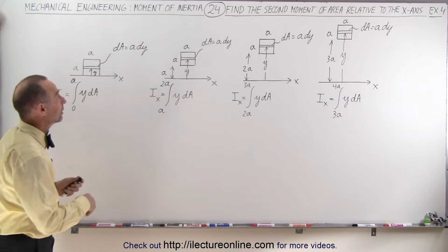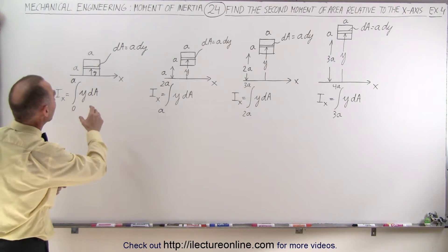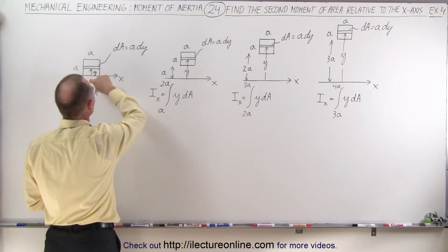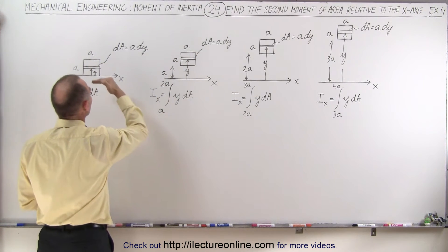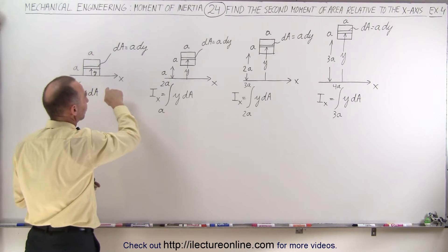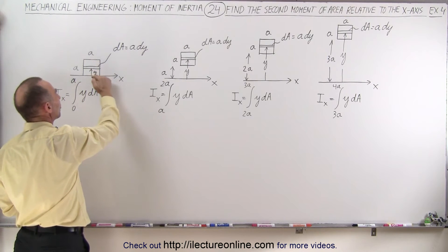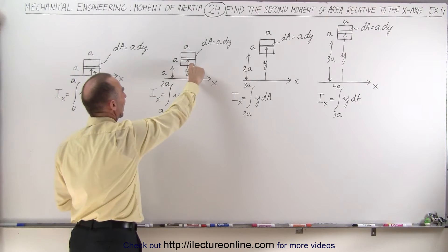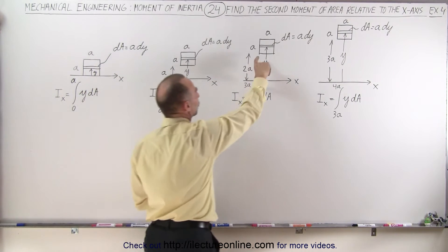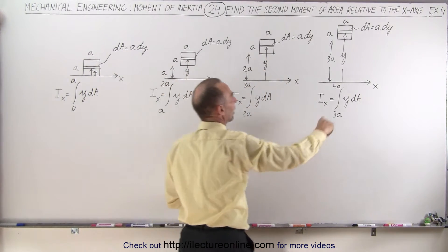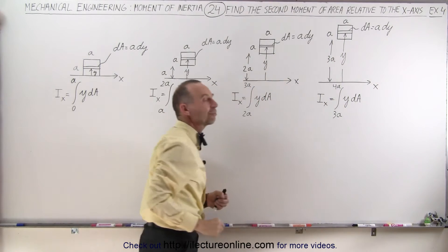What we're going to do here is find the second moment of area of each one of these squares. They're all the same size, a by a, but at different locations relative to the x-axis. Here it's adjacent to the x-axis, here's a distance a away, a distance 2a away, and a distance 3a away from the x-axis.